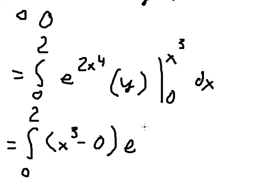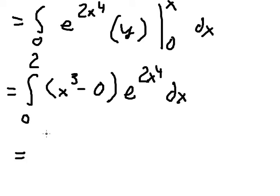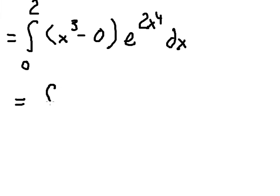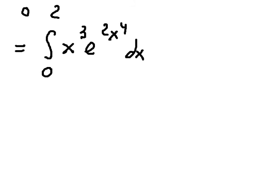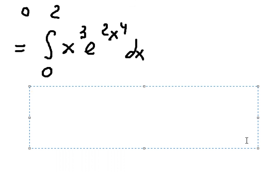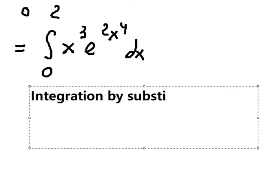So we have x to the power of 3 times e to the power of 2x to the power of 4, dx. The integration runs from 0 to 2. Now we can use integration by substitution to evaluate this.